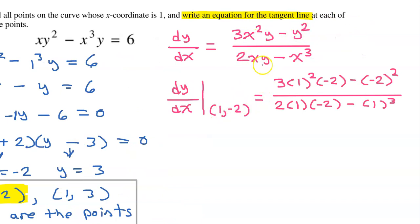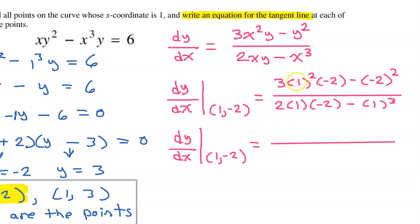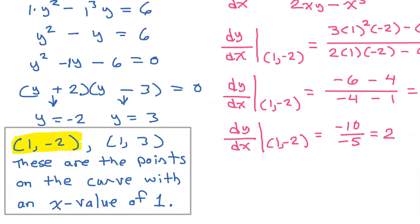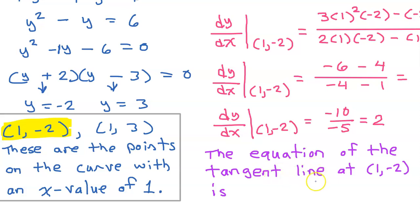Substituting 1 for all the x's and negative 2 for all the y's gives us this. 1 squared is just 1, so this is really 3 times negative 2, giving negative 6, minus negative 2 squared which is positive 4, so we have negative 6 minus 4. In the denominator, 2 times negative 2 is negative 4, minus 1. That simplifies to negative 10 over negative 5, which equals 2. So the equation of the tangent line at (1, -2) is y plus 2 equals 2 times (x minus 1).